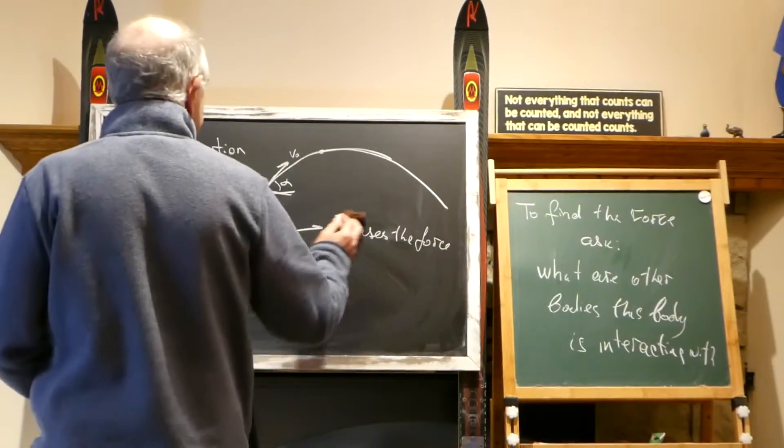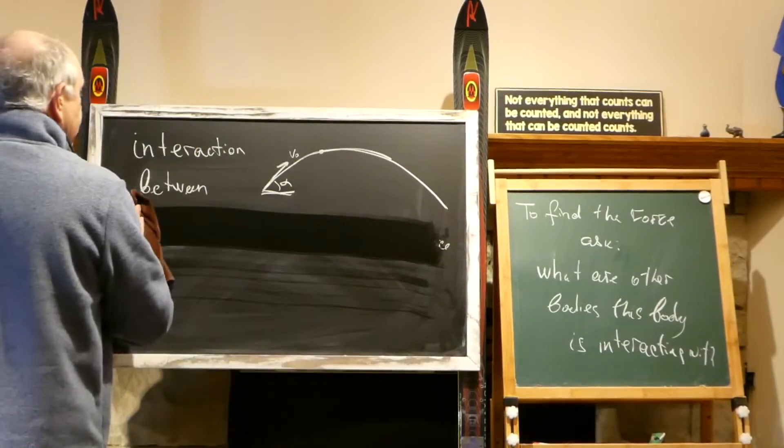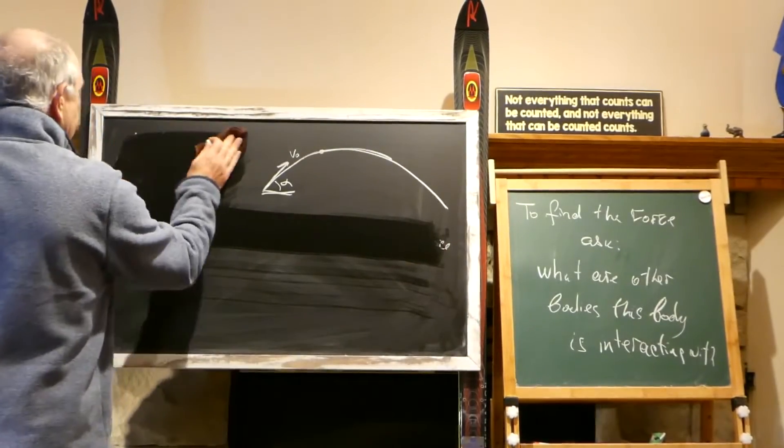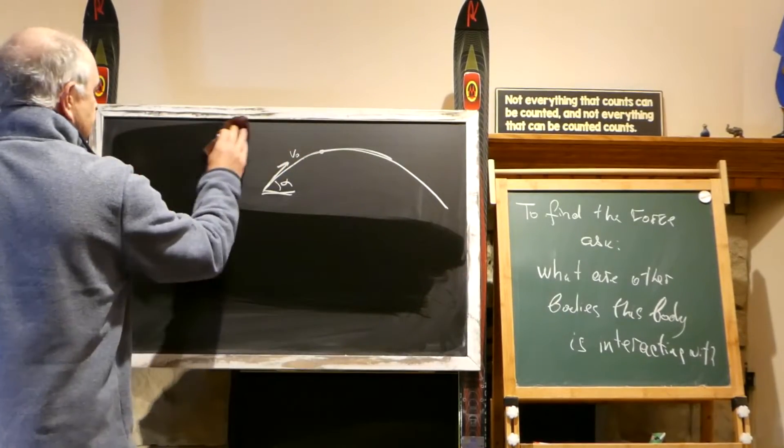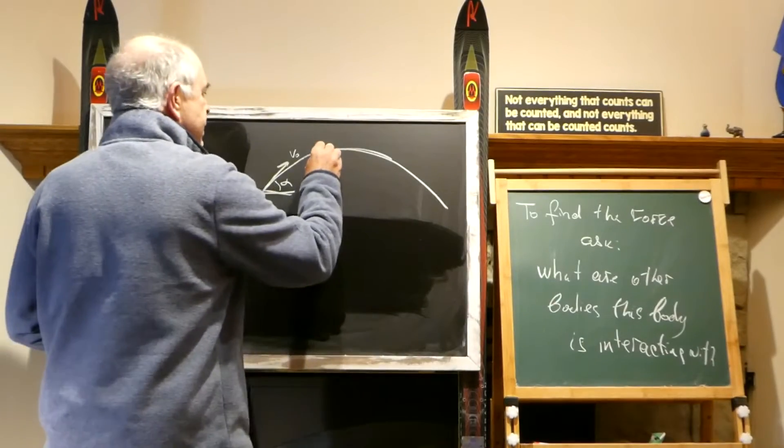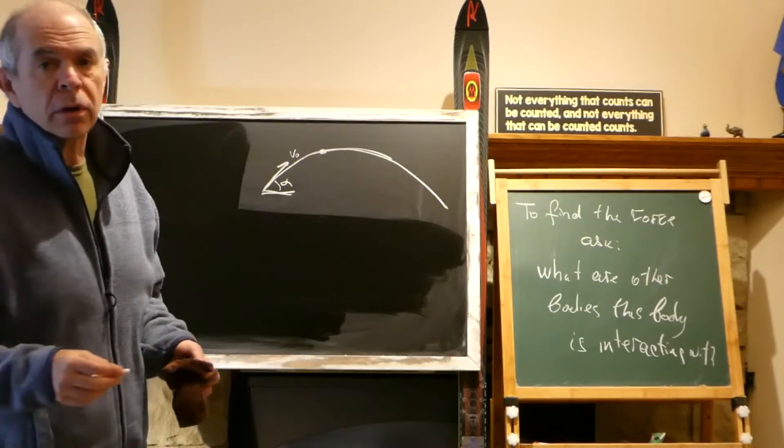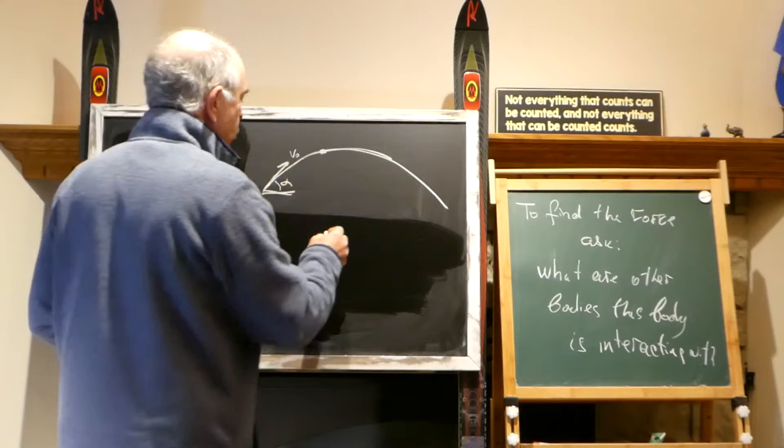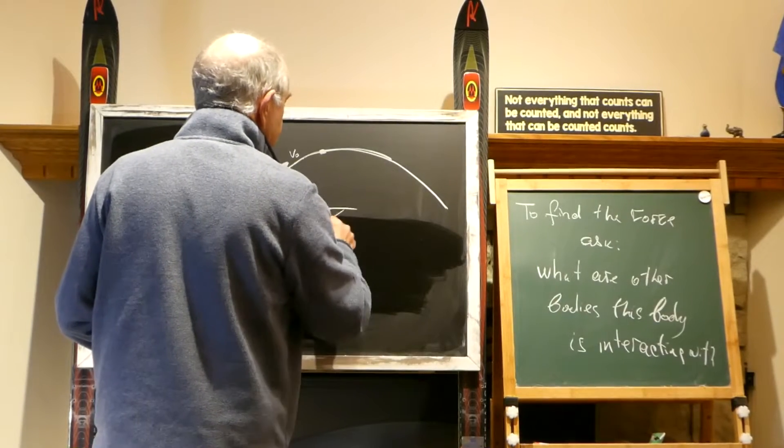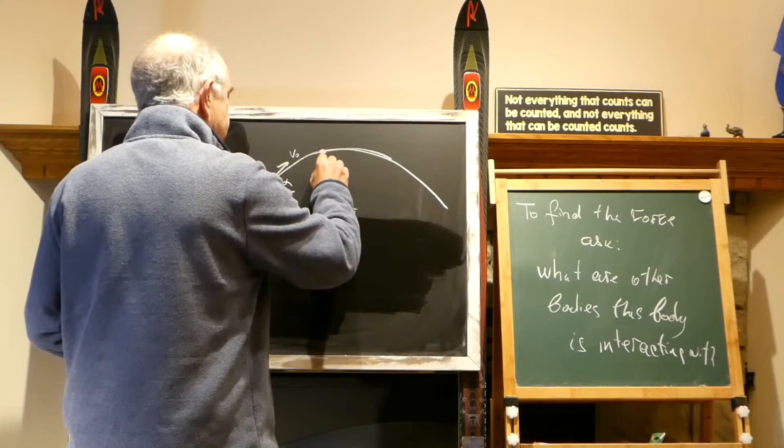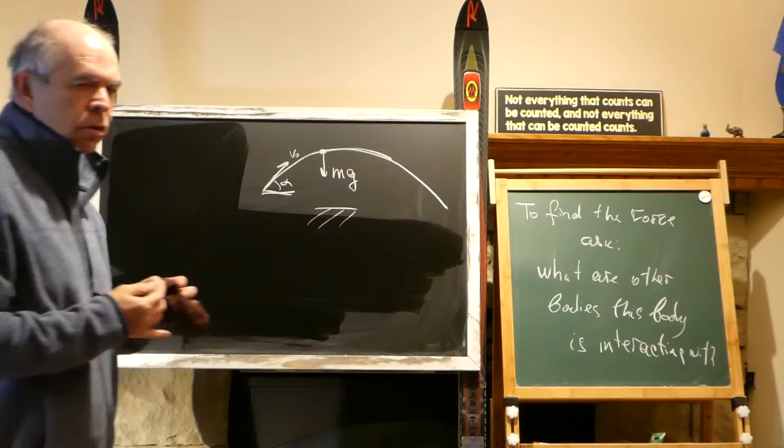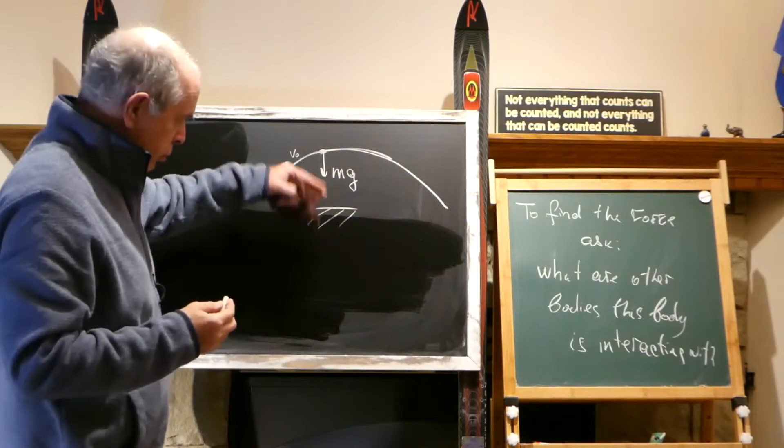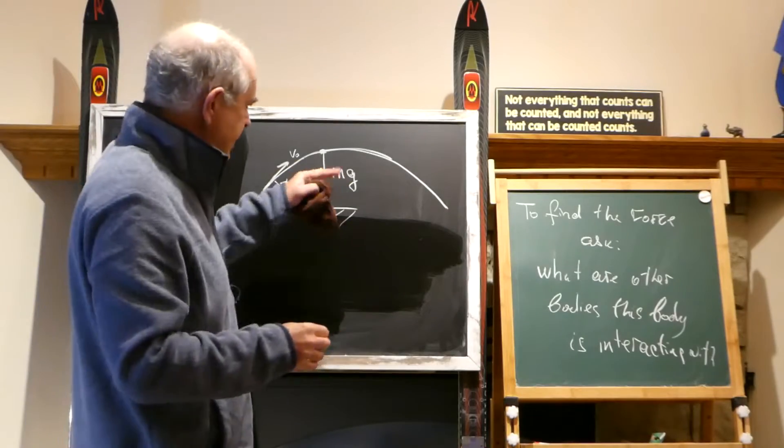So, if we have a body that's flying, what are other bodies that this body is interacting with? It's only one body. It's only one force. And this body is Earth. Earth and gravitational force. And gravitational force close to the surface of Earth is Mg.